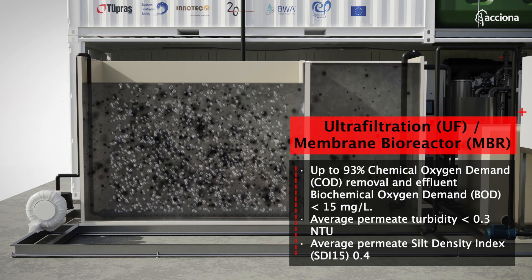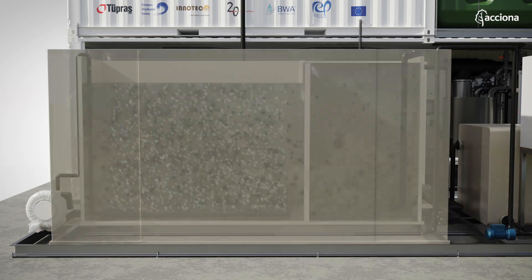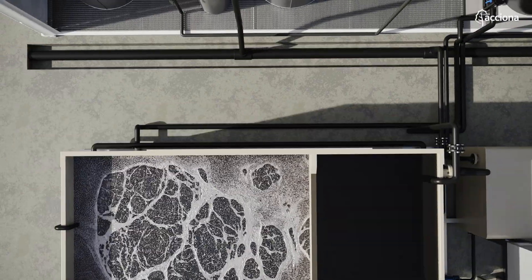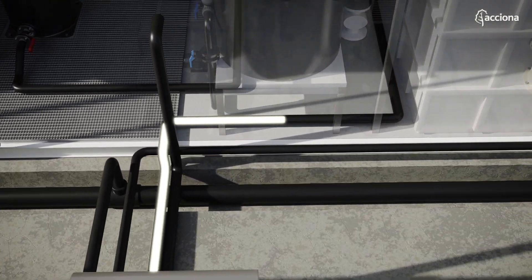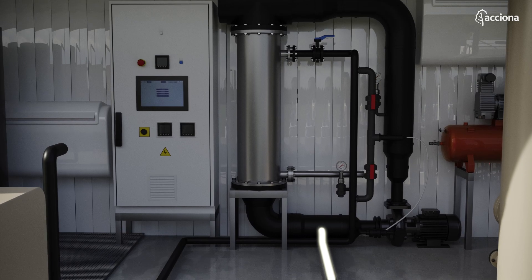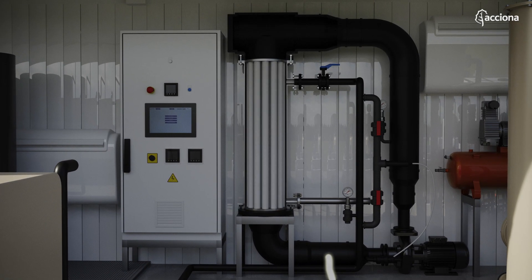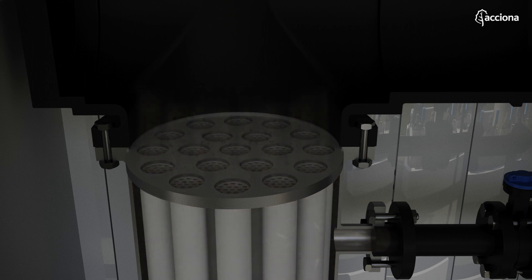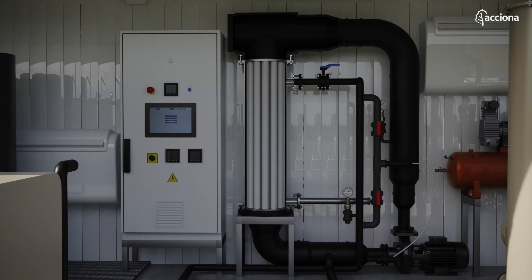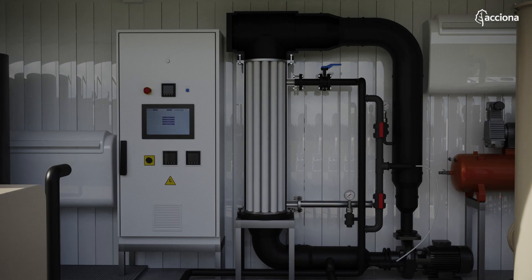Subsequently, water is fed to the ultra-filtration membrane. Water and those compounds smaller than a certain size pass through the pores of the ceramic membranes, whereas larger particles do not, thus creating a high-quality treated water free of suspended and colloidal material in a consistent way. There is a recirculation along the membrane in order to diminish membrane fouling, and also to the biological basin in order to maintain its biomass concentration.